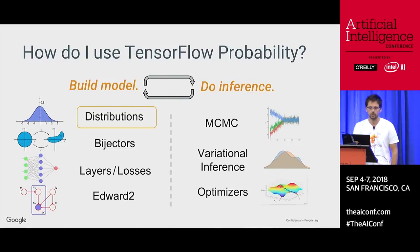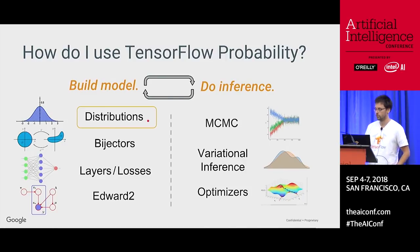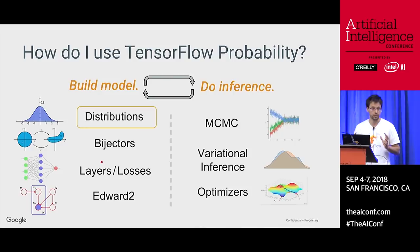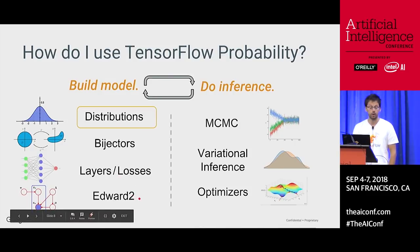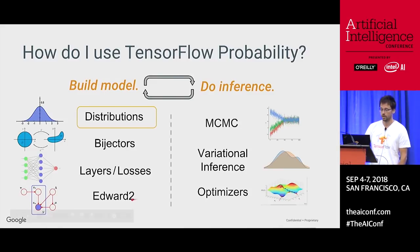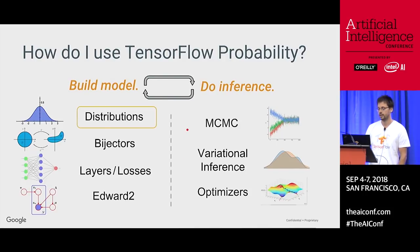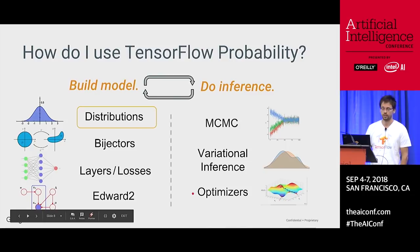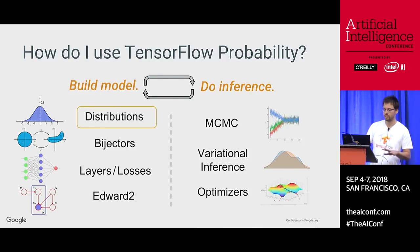That's some of the canned stuff we offer. Where things really get exciting is this suite of tools. We'll talk about distributions and bijectors. TensorFlow Probability provides probabilistic layers — things that wrap up variational inference with different distributional assumptions. We have a probabilistic programming language, the successor of Edward, also part of the package. On the inference side, we've got a collection of Markov chain Monte Carlo transition kernels, diagnostic criteria, and tools for variational inference in a numerically stable way. And various optimizers like stochastic gradient Langevin descent, BFGS, Nelder-Mead — the non-stochastic gradient descent stuff, some baking in probability with optimization.